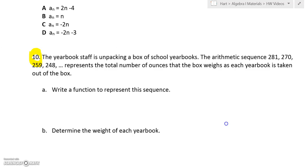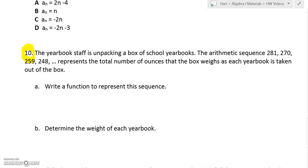Number ten is a word problem, it's a little trickier. It says the yearbook staff is unpacking a box of school yearbooks. The arithmetic sequence 281, 270, 259, 248 represents the total number of ounces that the box weighs as each yearbook is taken out. So the first number is 281, second one is 270, third one is 259, fourth is 248.